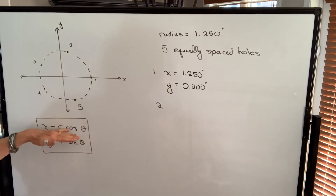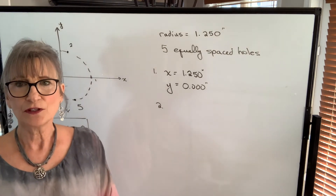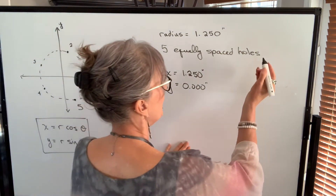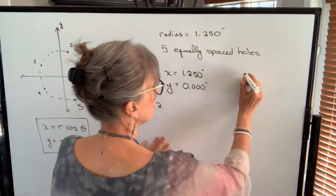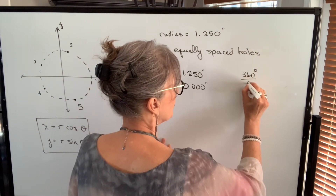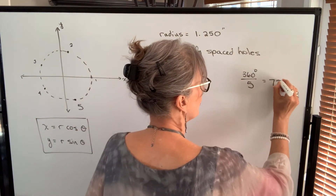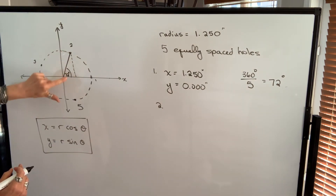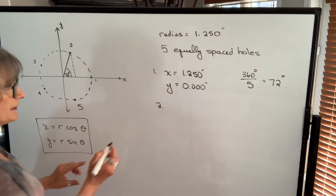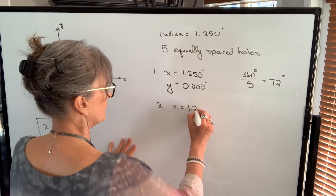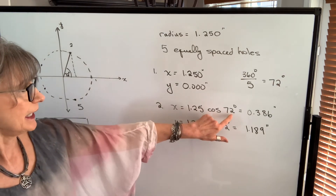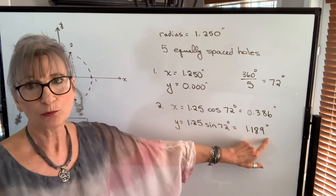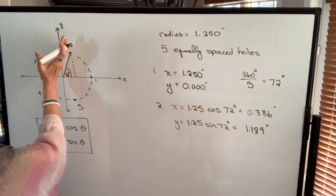To use the formulas, we need to know the angle. With five equally spaced holes, a complete rotation is 360 degrees, so we divide 360 by the number of holes to get the angle between subsequent holes. That gives us 72 degrees for hole number two. Plugging the radius and 72 degrees into the two formulas, we get an x-coordinate of 0.386 inches and a y-coordinate of 1.189 inches. Both are positive, which makes sense because we're in quadrant one.